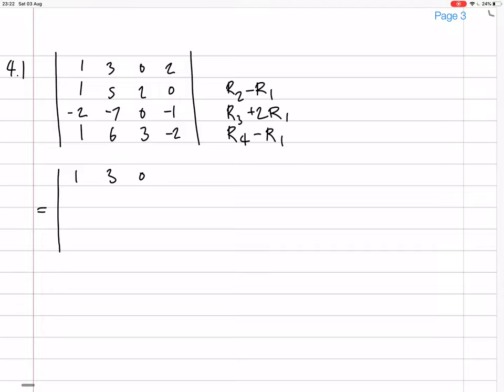Top row is the same. Second row now has become 0, 2, 2, 2, minus 2. The next row is 0, minus 7 plus 6 is minus 1, and then 0 there, and then minus 1 plus 4 is 3. And then here we have 0, 6 minus 3 is 3, 3 is there as well, and minus 2 minus 2 is minus 4.